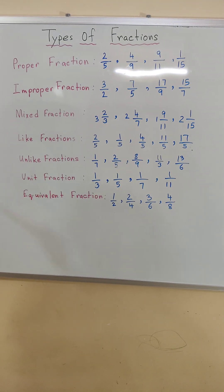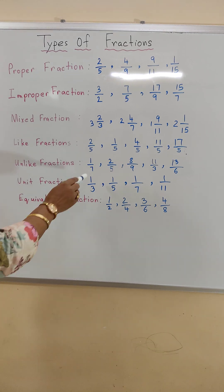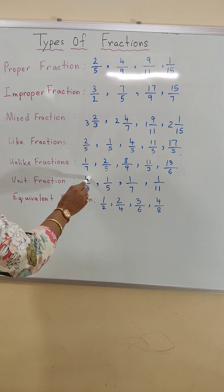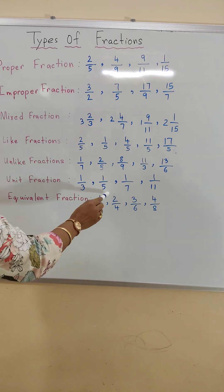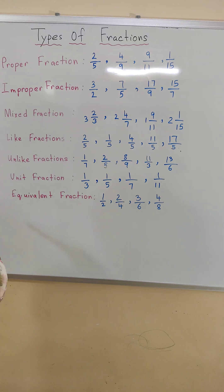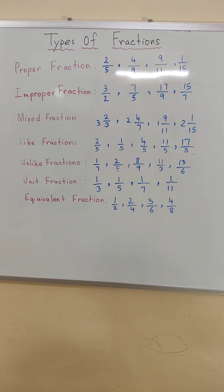Next, unit fractions where in this fraction whose numerator is 1 is called the unit fraction. 1 by 3, 1 by 5, 1 by 7, 1 by 11 are the examples of unit fractions.